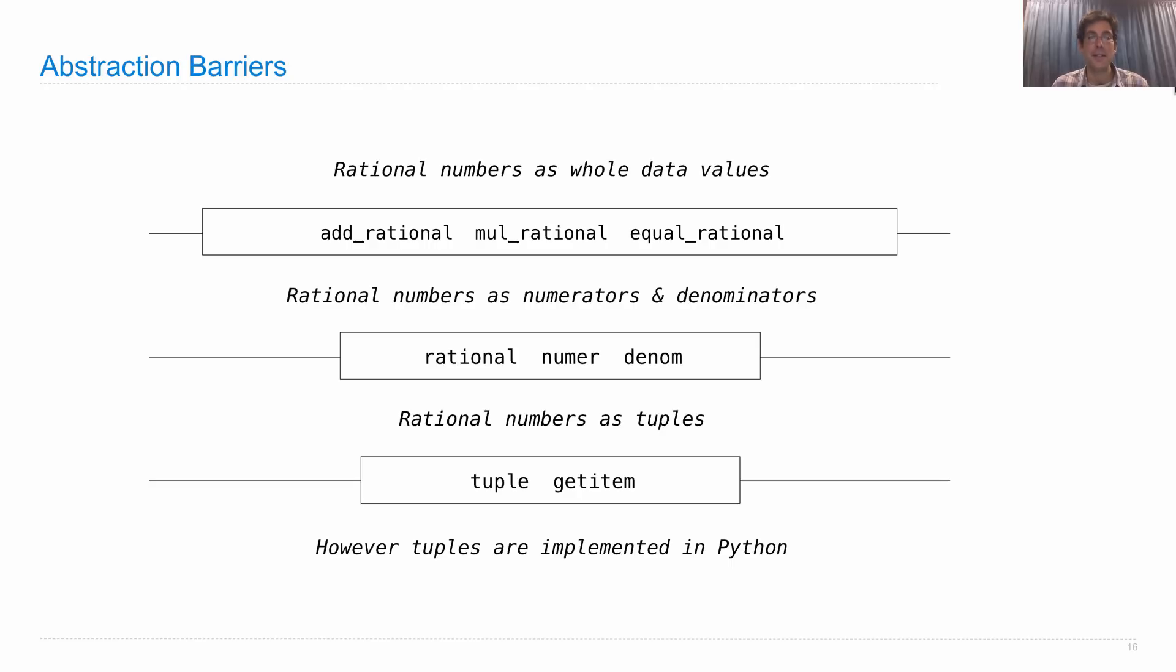The next level down says that rational numbers are implemented as tuples, meaning that a rational number is in fact just a tuple.